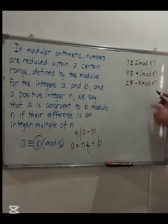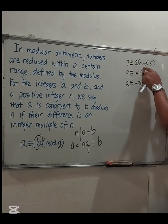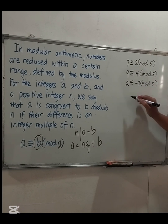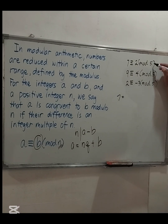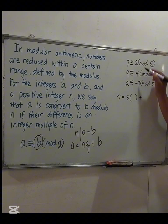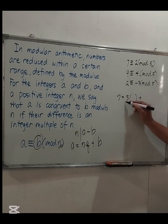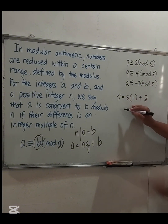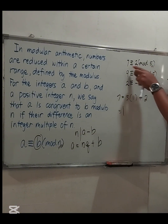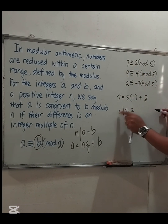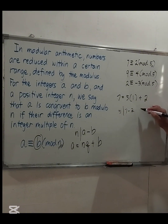For example, if we have 7 congruent to 2 modulo 5, let's verify this is true. We can write 7 = 5 × 1 + 2, so this is true. Also, 5 divides their difference 7 minus 2, which is 5. So 5 divides 5 — that is true.